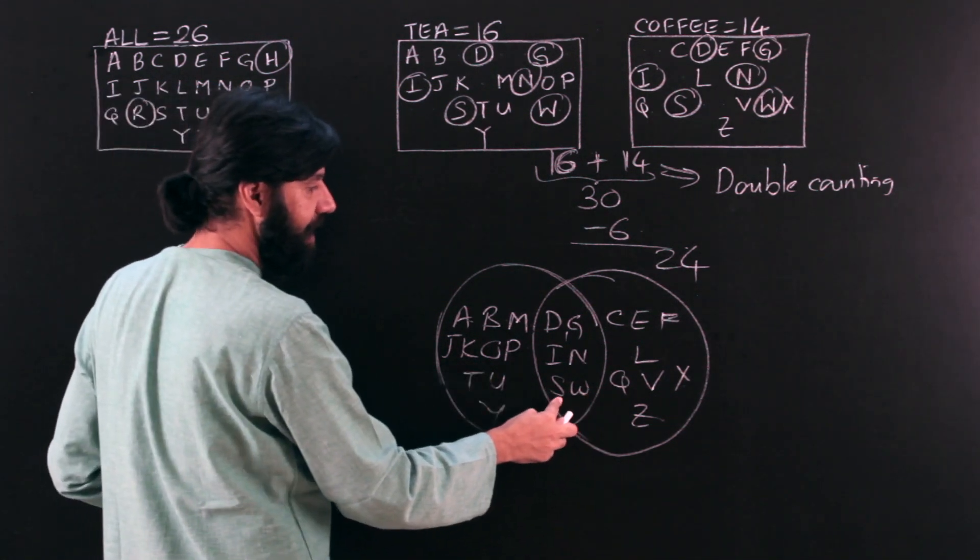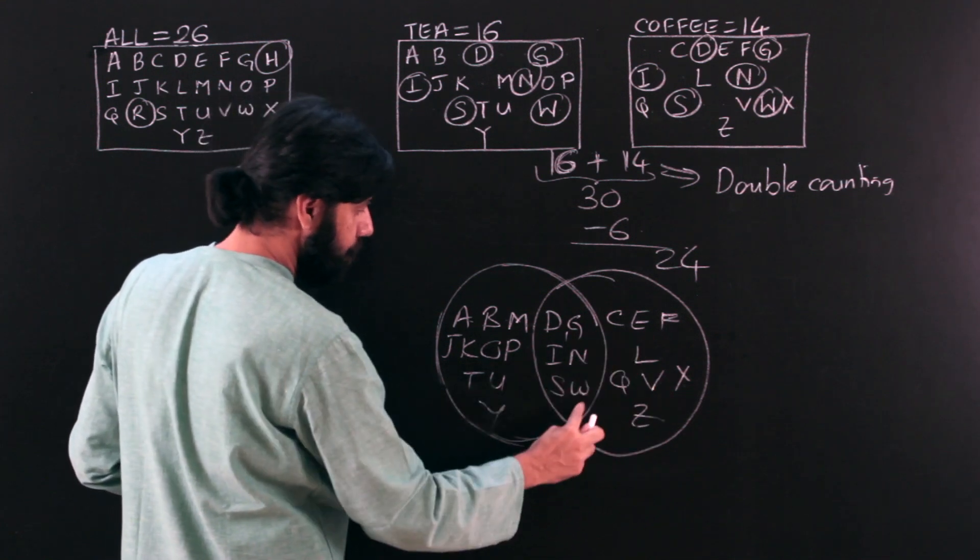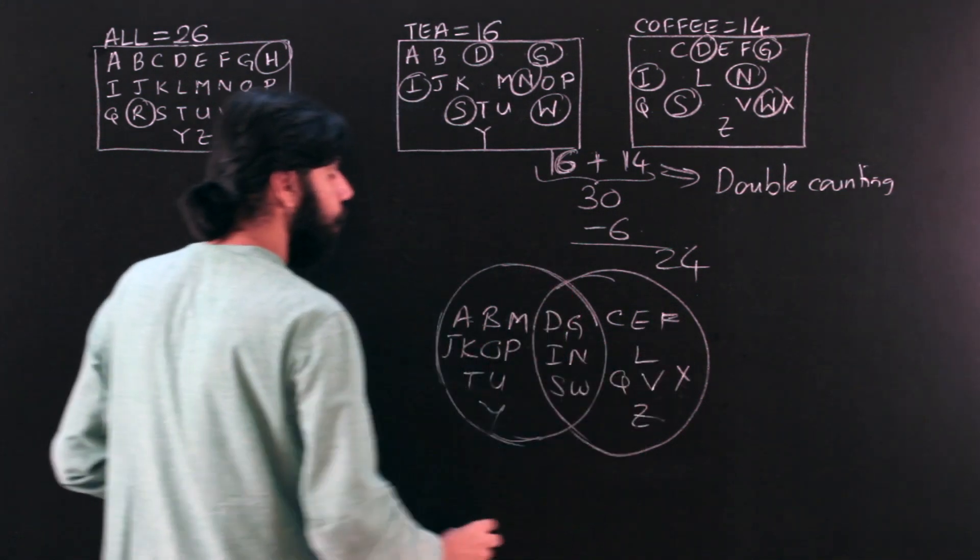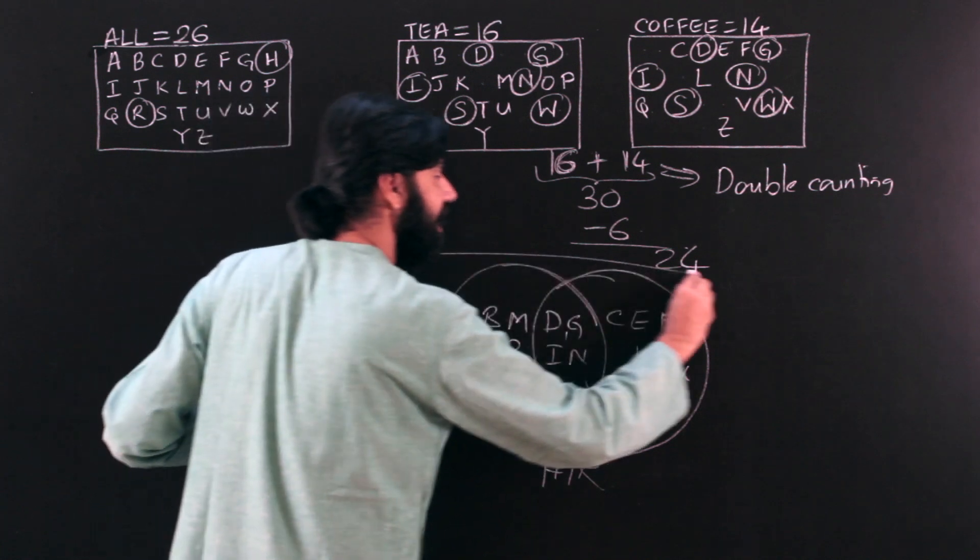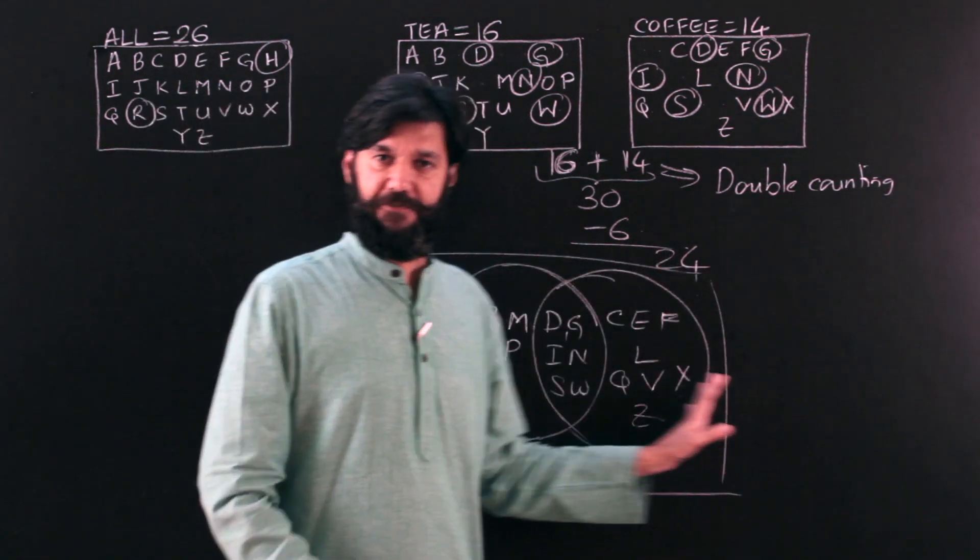And the rest, there are S, T, S, T, U, V, W, X, Y, Z. So remember, also H and R are going to be individuals who are going to be outside this set, and then my whole 26 people are accounted for.